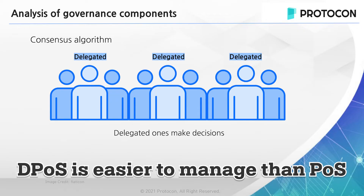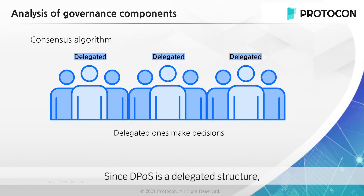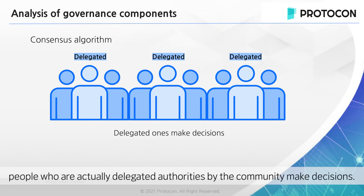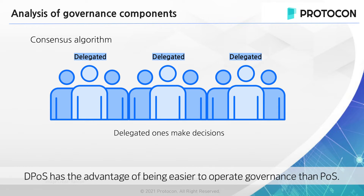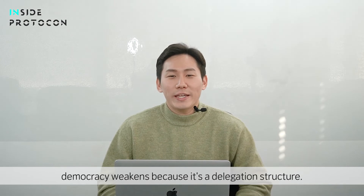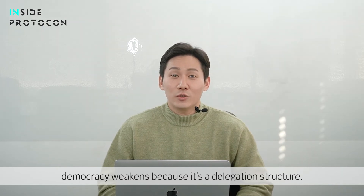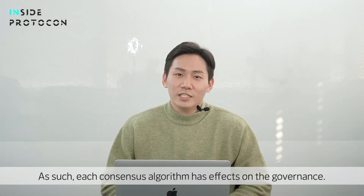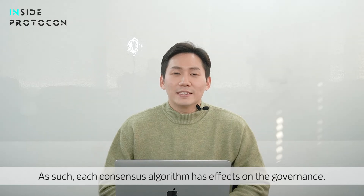DPOS is a further reduced version of POS. Since DPOS is a delegated structure, people who are actually delegated authority by the community make decisions. DPOS has the advantage of being easier to operate governance than POS. On the other hand, democracy weakens because of its delegation structure. As such, each consensus algorithm has effects on governance.